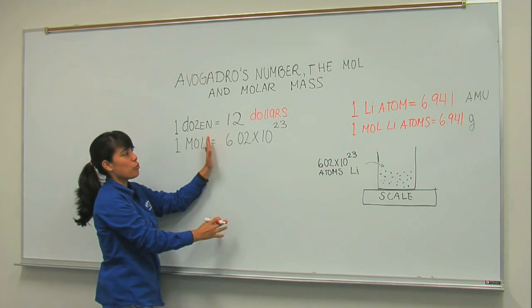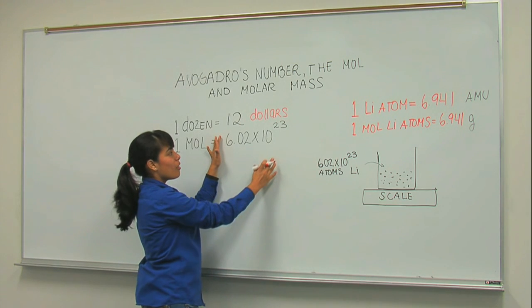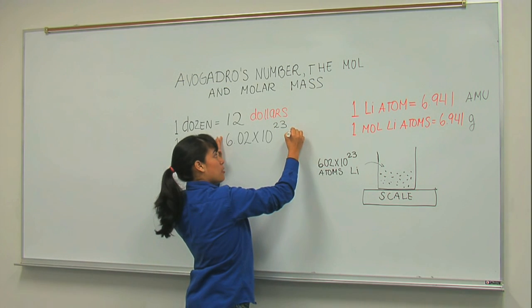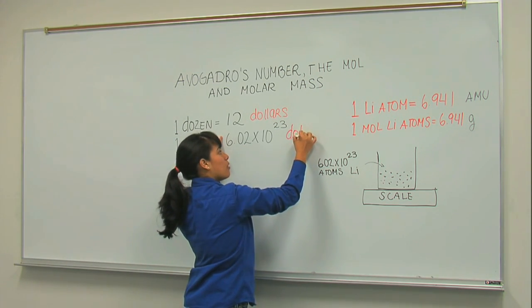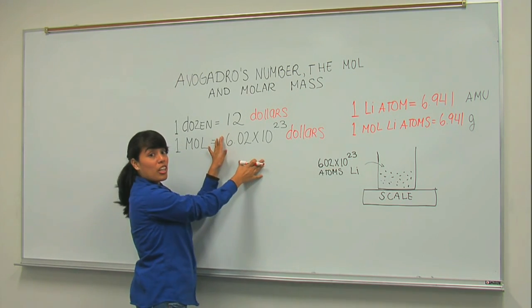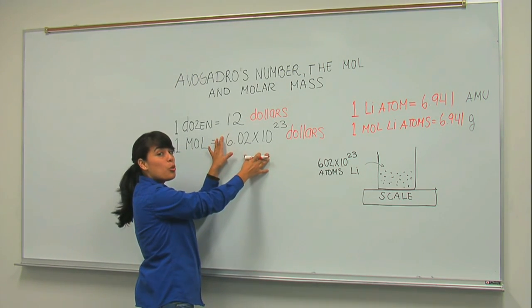Now, if I tell you that I want to earn Avogadro's number, that means that I want to earn 6.02 times 10 to the 23 dollars. That's more than a trillion of dollars. So it is a huge number.